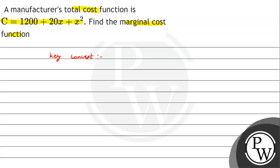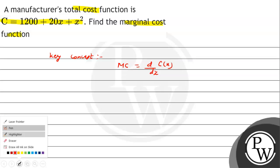The key concept is marginal cost function. What is this? This is the differentiation of cost function. This is marginal cost, so MC - M for marginal, C for cost. Marginal cost function is the differentiation of cost function with respect to the quantity x.